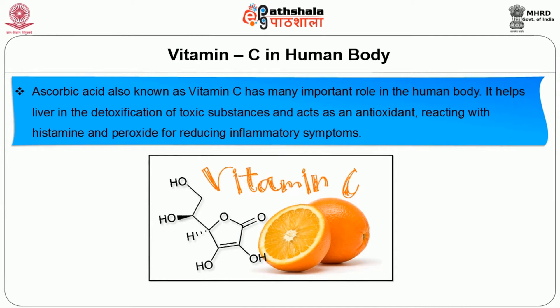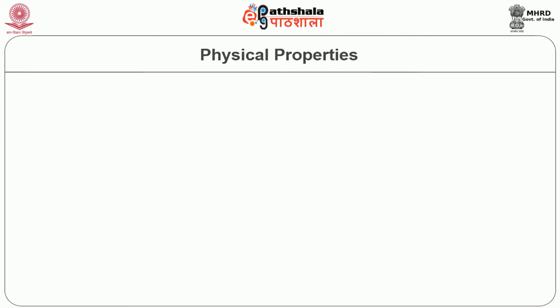Ascorbic acid, also known as vitamin C, has many important roles in the human body. It is essential for the synthesis of collagen, a protein that has many connective functions in the body. For synthesizing hormones, neurotransmitters, and metabolism of certain amino acids and vitamins, ascorbic acid is required. It helps the liver in the detoxification of toxic substances and acts as an antioxidant, reacting with histamine and peroxide for reducing inflammatory symptoms.